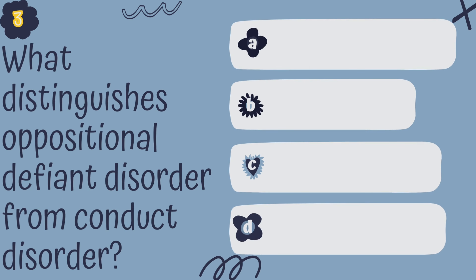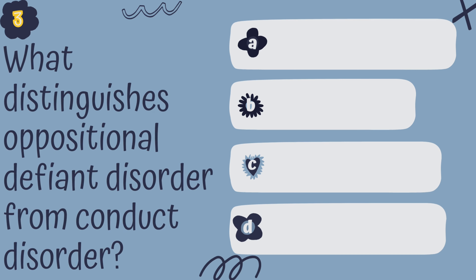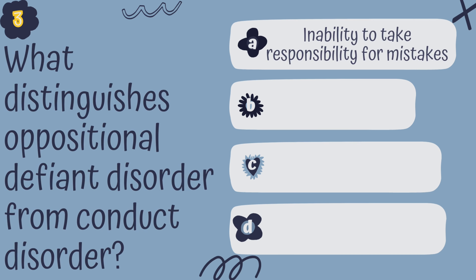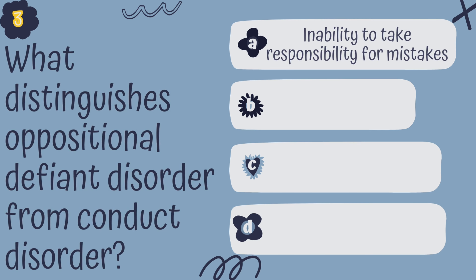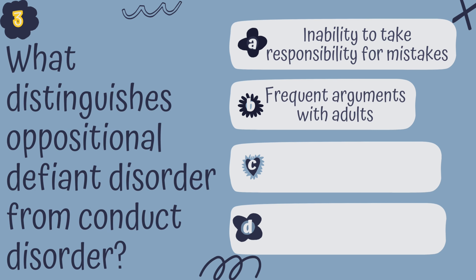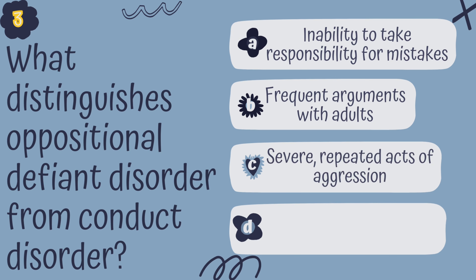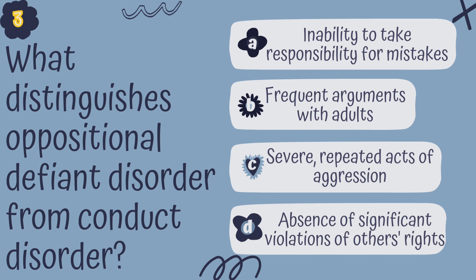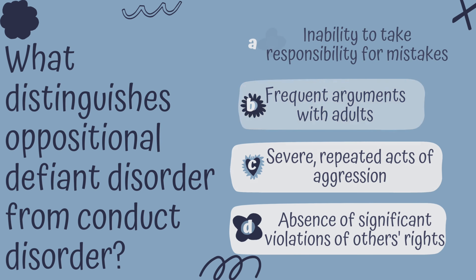Question 3. What distinguishes ODD from conduct disorder? A. Inability to take responsibility for mistakes, B. Frequent arguments with adults, C. Severe, repeated acts of aggression, or D. Absence of significant violations of others' rights.